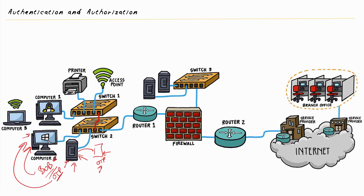With a time-based one-time password, Bob's OTP is only valid for 60 seconds, so if an attacker gets it, they won't be able to use it in the future. If it's a hash-based one-time password, the password Bob authenticated with won't be the same for the next authentication—it rotates. So whether the hacker steals a time-based or hash-based OTP, because the attacker doesn't have Bob's one-time password generator, that helps keep Bob's authentication secure.